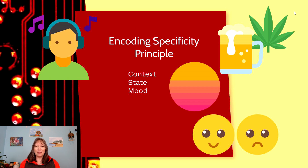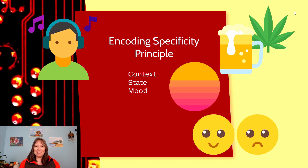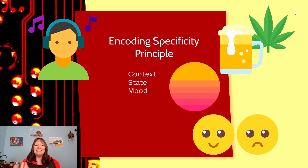Some studies have found that the encoding specificity principle even applies when you are inhibited by certain substances — for example, if you were studying while drinking alcohol, you might recall the material better the next time you're drinking socially. However, I do not recommend getting overly intoxicated on cannabis or alcohol to prepare for tests, as that has been found to not be effective. The encoding specificity principle is the idea that the state of mind you're in when you learn something is the state of mind you're best in to recall it — as long as your mind is actually working and not overly intoxicated.